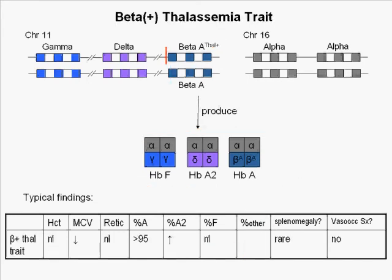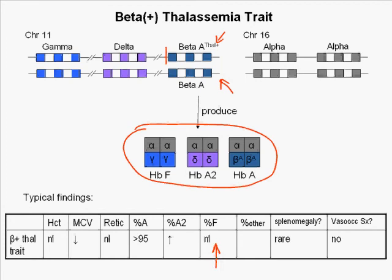In beta plus thalassemia trait, one beta globin gene is normal and the other carries a mutation that decreases its production of otherwise normal beta globin. Three hemoglobins are produced: a small amount of hemoglobin F, a slightly elevated amount of hemoglobin A2, and more than 95% hemoglobin A. Individuals with beta plus thalassemia trait have no significant morbidity or mortality.